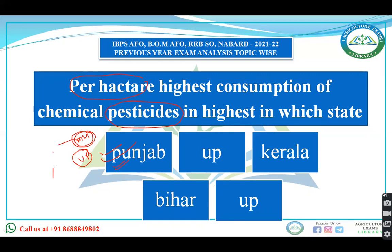Lowest consumption of chemical pesticides is in Arunachal Pradesh. When you talk about states plus union territories, there is another state or UT that consumes the least chemical fertilizers — you can put your answer in the comment section. For overall pesticide consumption across states plus UTs, it is Maharashtra.